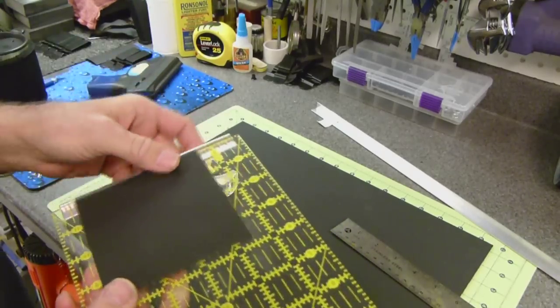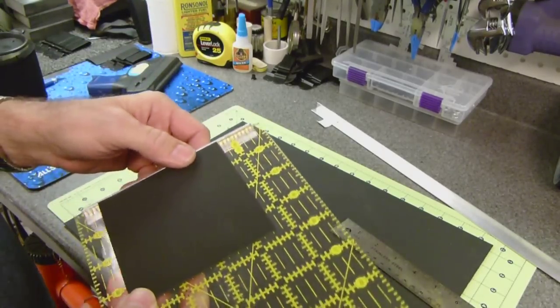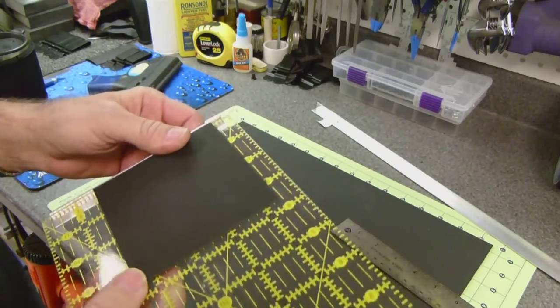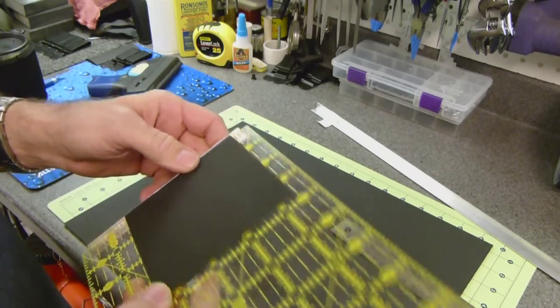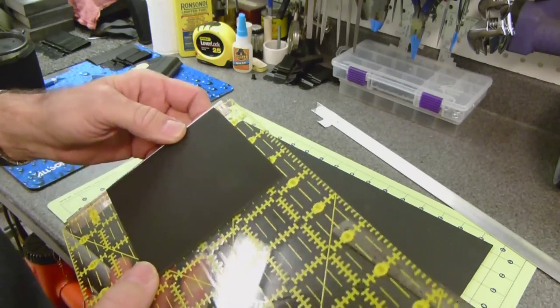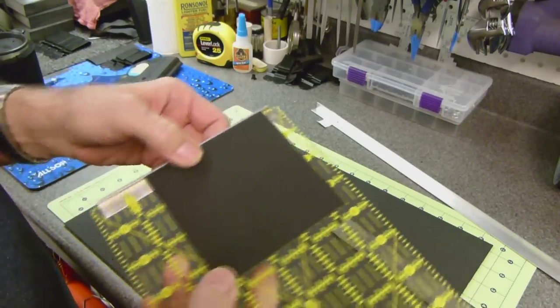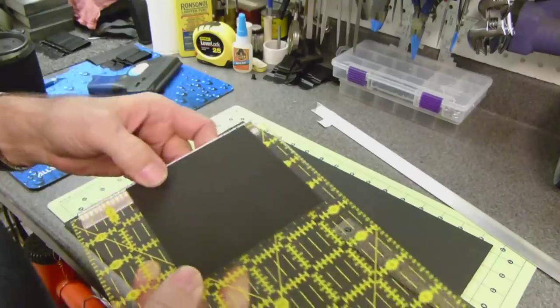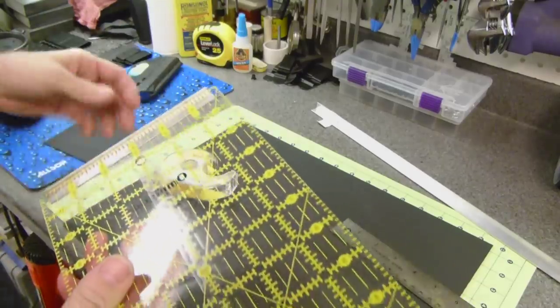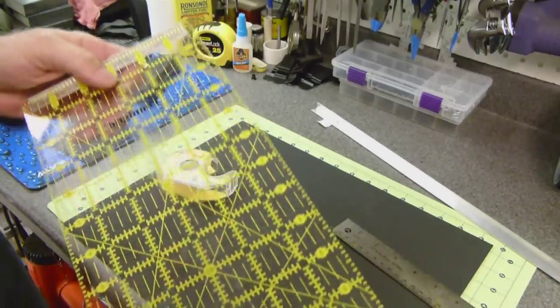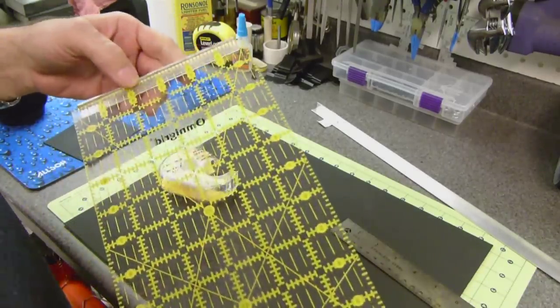You could use a Dremel tool. Pretty much anything if you work at it. You could do it with a file. It wouldn't be that hard. Make a rough cut first and then just finish it up with a file and use your kydex as a guide. It should work out well. I'm fortunate enough to have metalworking tools so it was pretty easy for me.